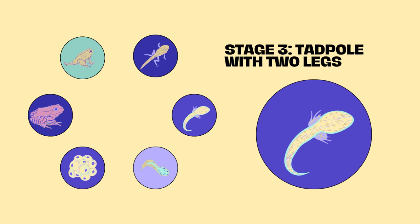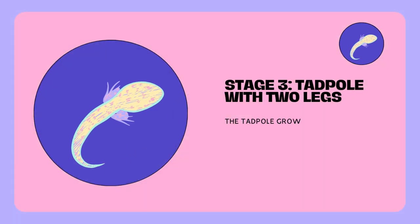Stage 3: Tadpole with two legs. The tadpole grows two front legs, and its long tail becomes shorter and shorter.